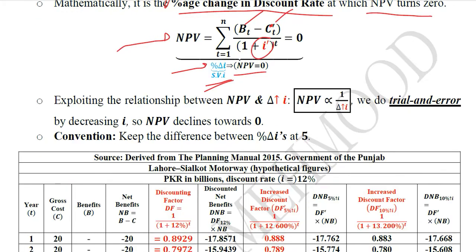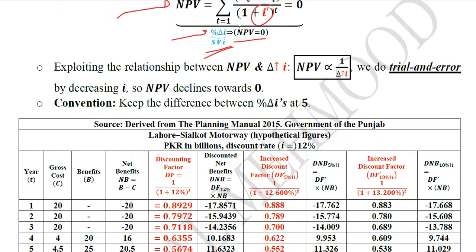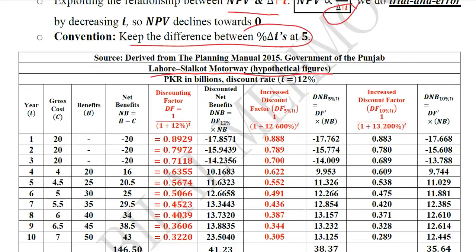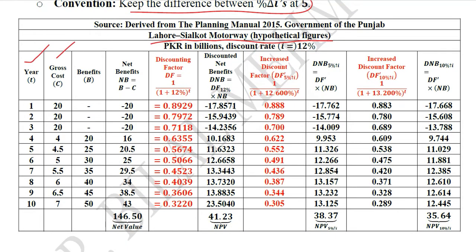This can be better understood with the example we have been using — the Lahore-Syalkot motorway — where we exploit the negative relationship between discount rate and NPV. We are going to increase the discount rate to see what happens with NPV, with the maximum difference again being 5%. You can see the year, the gross cost, the benefits — they are the same. Net benefits are calculated as before. This is the original discount rate and the discounted net benefits, the sum of which gives us the NPV.